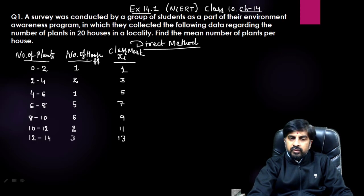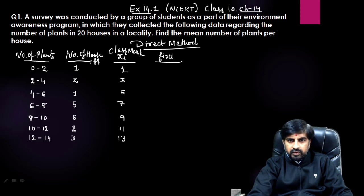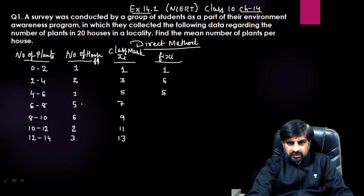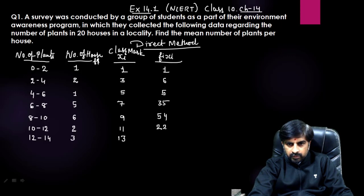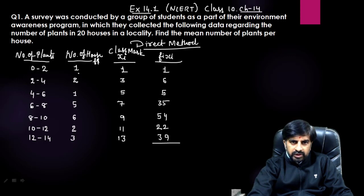Now you need to multiply fi and xi — this product is called fi×xi, or summation of fi×xi. So: 1×1=1, 2×3=6, 1×5=5, 7×5=35, 9×6=54, 11×2=22, and 13×3=39. Now you need to add these products, and you also need to add the frequencies separately, because both are needed for the formula.